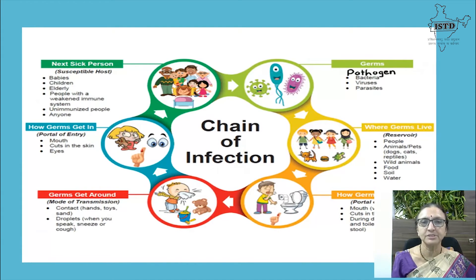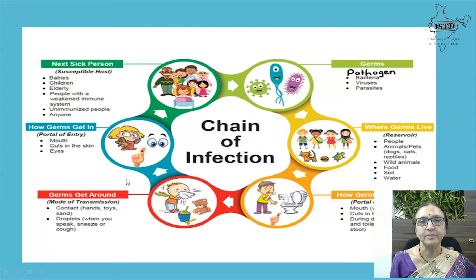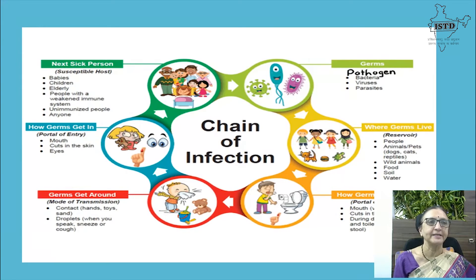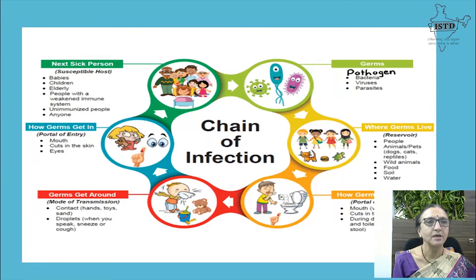Germs exit the reservoir through the mouth such as with vomit, through cuts, or during diaper changing or toilet use through stool. Then germs get around through contact with hands or toys, or via droplets when a person speaks, sneezes, or coughs. Germs then enter a new host — the portal of entry — again through the mouth, cuts in the skin, or the eyes.